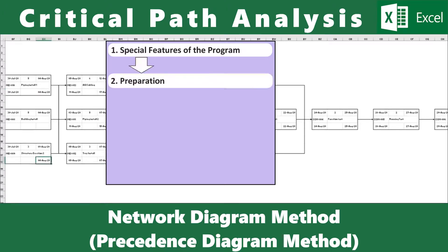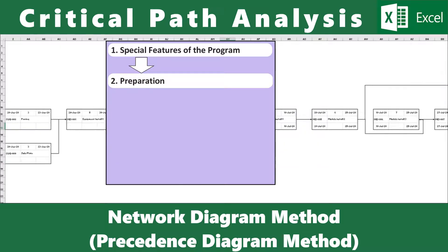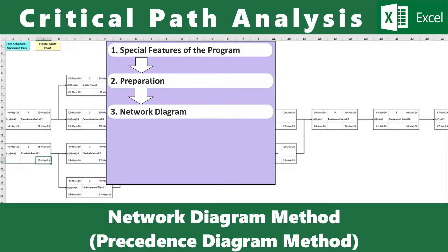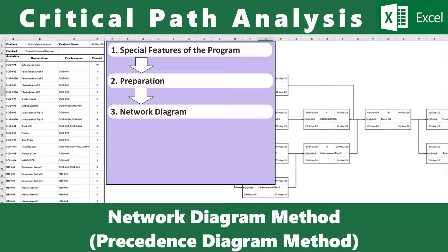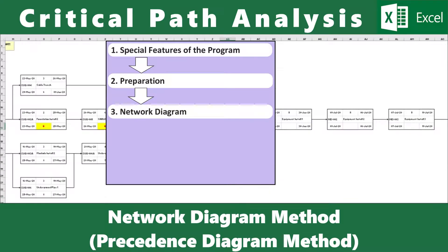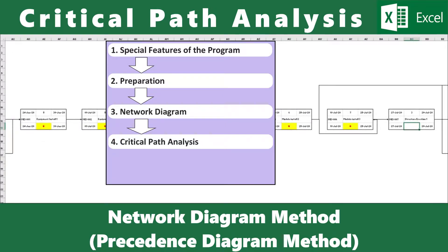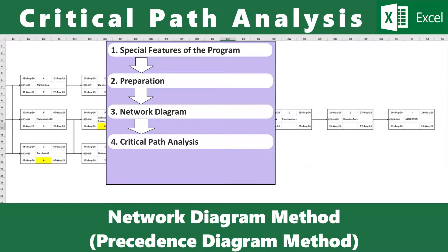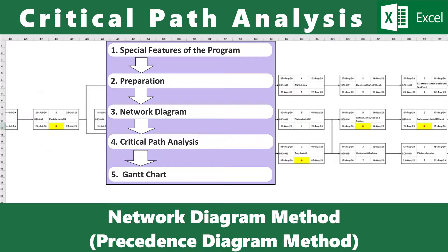Second, preparation works such as essential worksheets and preliminary activity schedule data. Third, create an initial network diagram to review and finalize schedule data by modifying the network diagram. Fourth, perform critical path analysis using the network method along the forward and backward pass. Lastly, generate a Gantt chart based on the final network diagram.